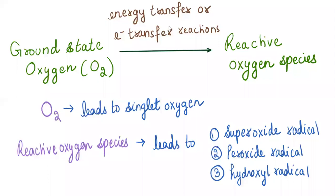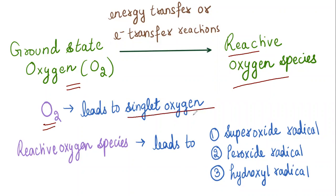When we talk about the process of reactive oxygen species creation, oxygen is at the ground state and during electron transfer or energy transfer reactions, reactive oxygen species are created. Oxygen undergoes reactions to become singlet oxygen. Reactive oxygen species lead to superoxide radical, peroxide radical, and hydroxyl radical. These radicals are responsible for imbalance in the living system, creating chain-like reactions that lead to destruction and oxidative stress in our body.